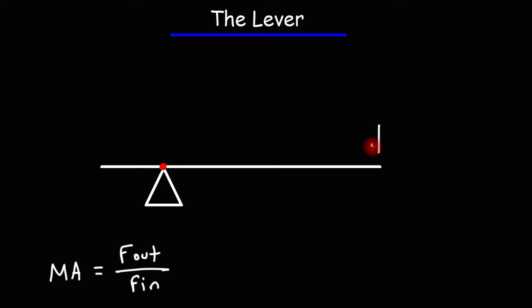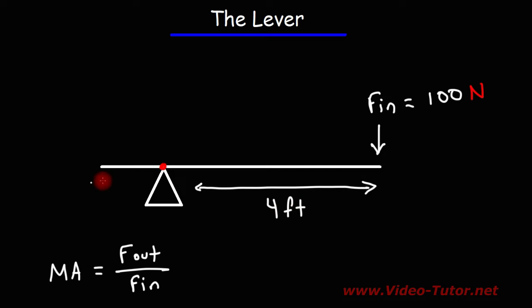Let's say we apply an input force of 100 newtons. The distance between the fulcrum and the point where you apply the input force is 4 feet, and the distance on the other side is 1 foot. What do you think the output force will be on the left side of the lever?